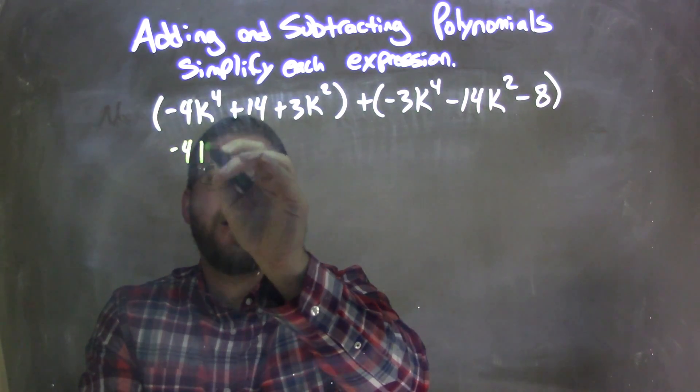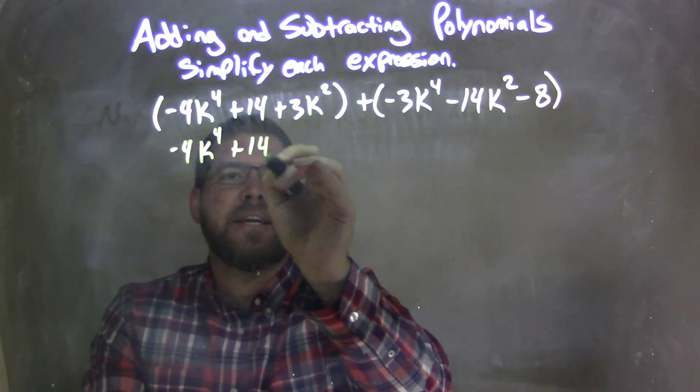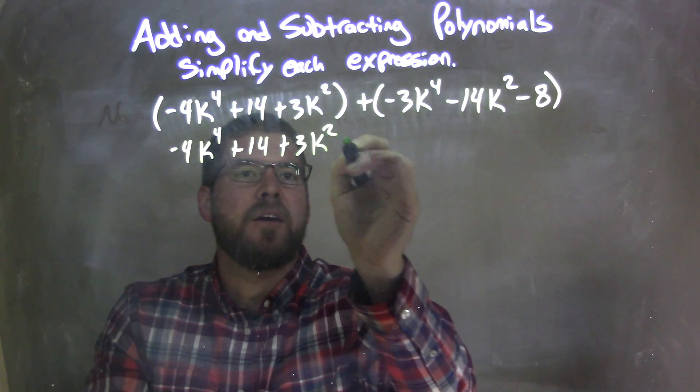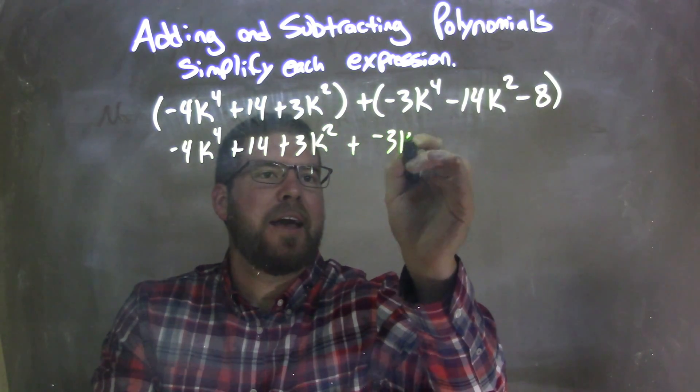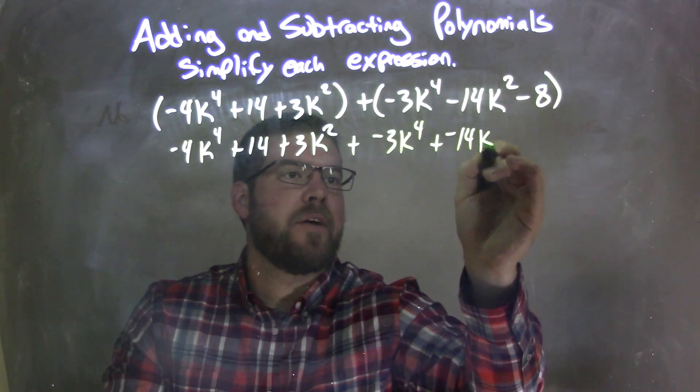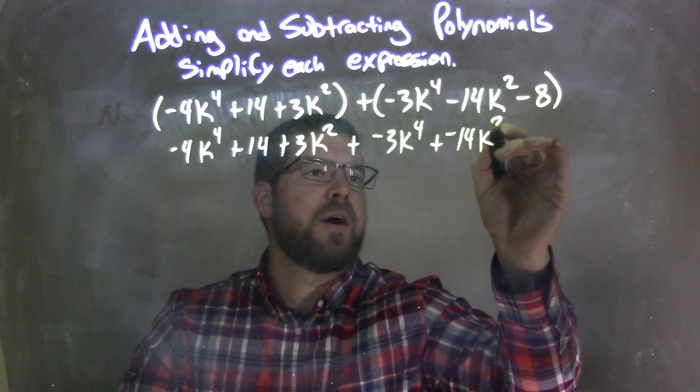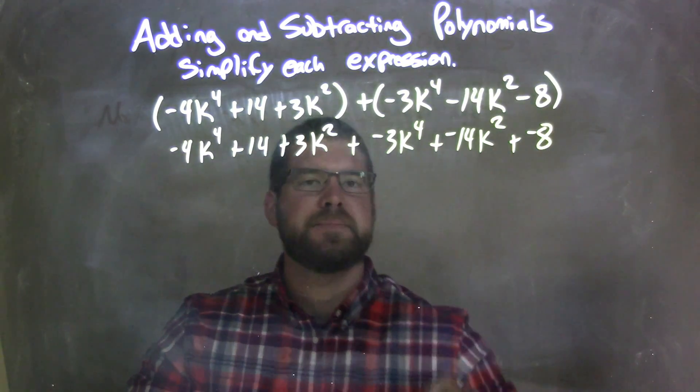So I have negative 4k to the 4th, plus 14, plus 3k squared, plus a negative 3k to the 4th, plus a negative 14k squared, plus a negative 8, okay?